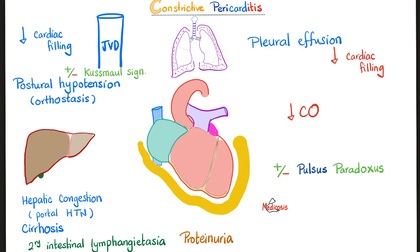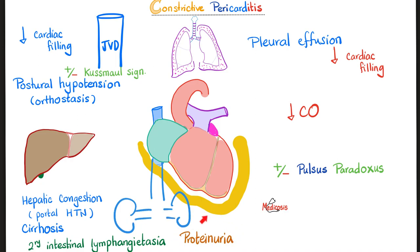Summary of constrictive pericarditis findings: decreased filling on the right gives jugular venous distension, positive Kussmaul sign, postural hypotension, hepatic congestion, portal hypertension, cirrhosis, and secondary intestinal lymphangiectasia. Decreased filling on the left gives pleural effusion, pulmonary congestion, symptoms of low cardiac output, and pulsus paradoxus. Kidney congestion via the inferior vena cava can also lead to proteinuria and renal failure.